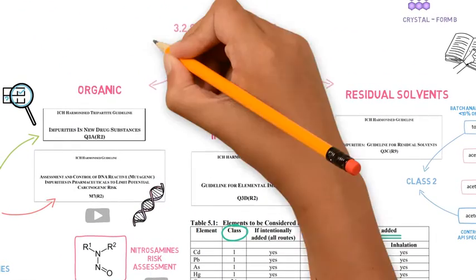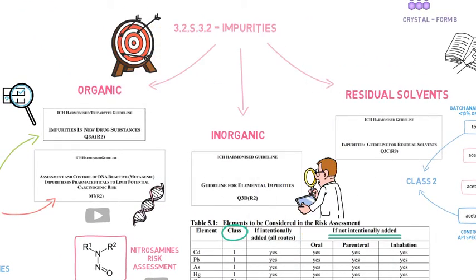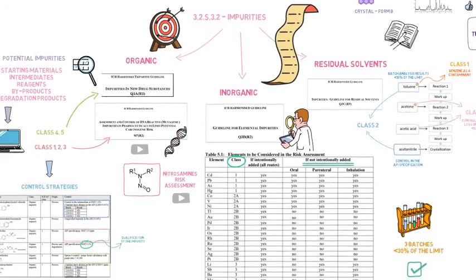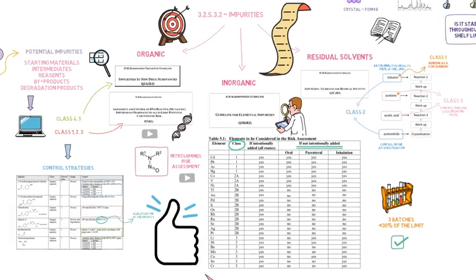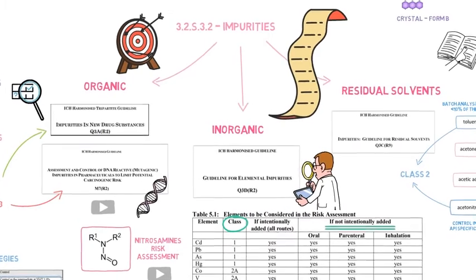The impurities chapter is a DMF section which very frequently shows gaps, and a very common theme within regulatory deficiency letters. The safety of the API depends on an adequate control of its impurities, and that's why it's so important for this chapter to be very complete, well explained and in line with international guidelines.